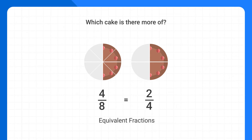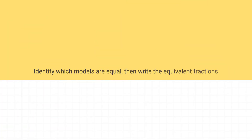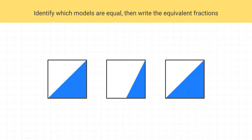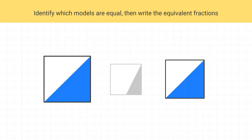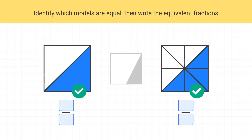Now that you understand what equivalent fractions are, let's practice identifying some of them together. Let's identify which of these models are equal and then write out the equivalent fractions. First, let's find which models are equal — look for those that have the same amount shaded. If you were to remove all of the lines, you can see this model and this model have the same amount shaded. That means these two models are equal.